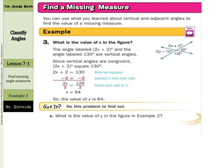We can also find missing angle measures. What is the value of x in the figure? We have the expression 2x + 2 and the angle 130°. Since these are opposite from each other and share a vertex, they are vertical angles. Since vertical angles are congruent, we set the equation 2x + 2 = 130 and solve to get x = 64.